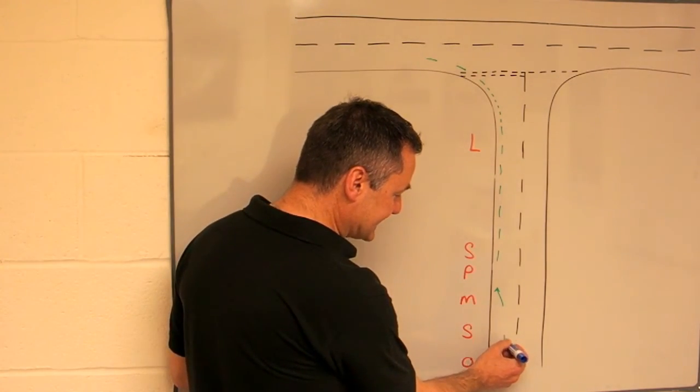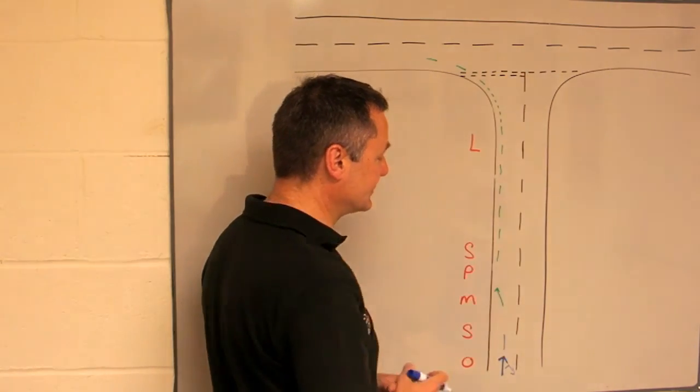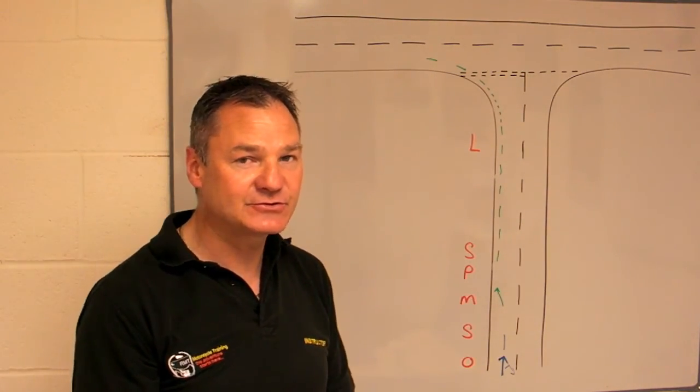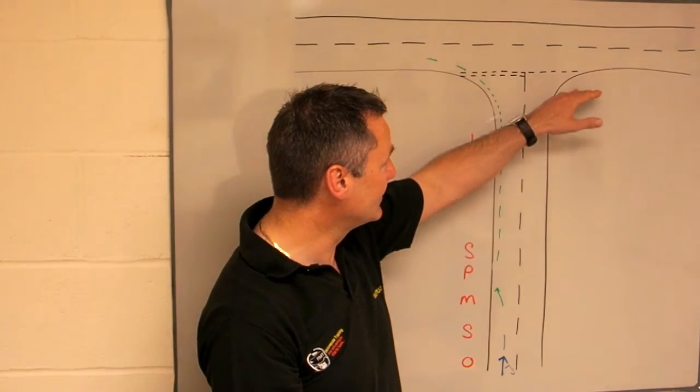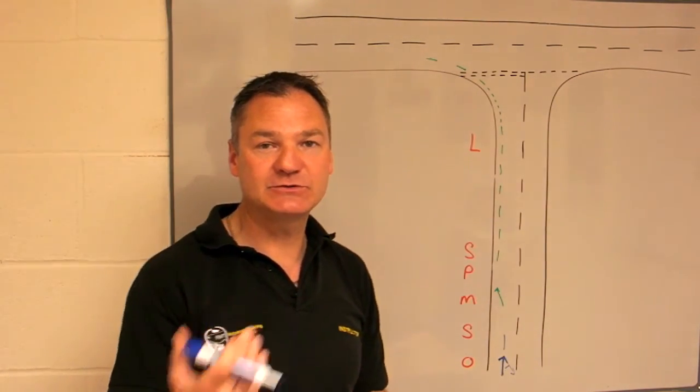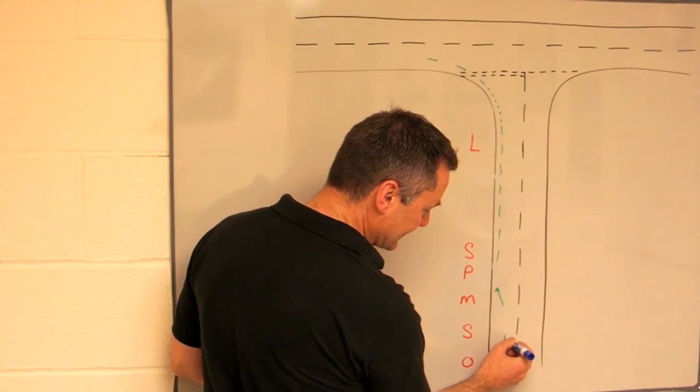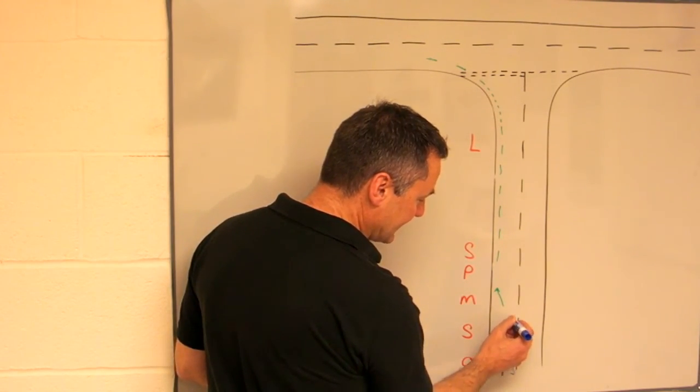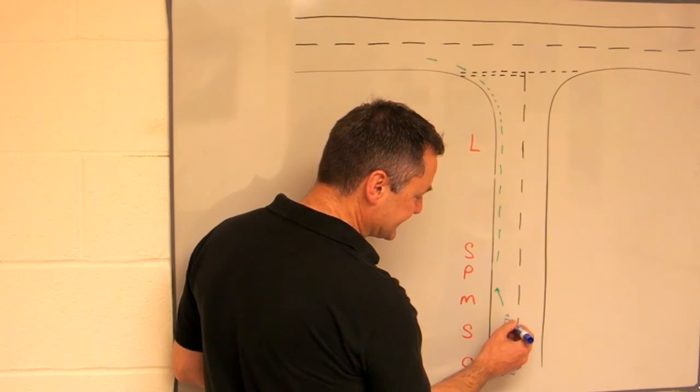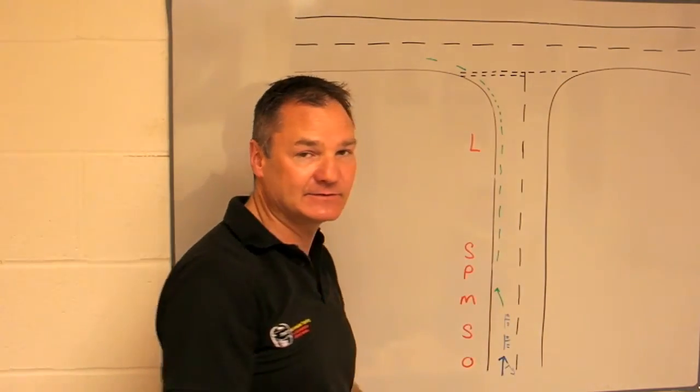When you look forward, you're going to assess how far away the junction is. If there are any junctions in between you and the end of the road, we're just going to delay the indicator. Looking here, there's no junction, so we put the right indicator on, and that tells people we intend to turn right at the end of the road.